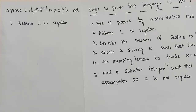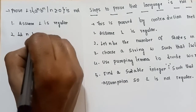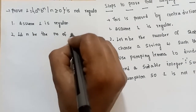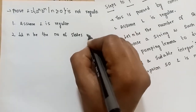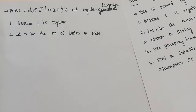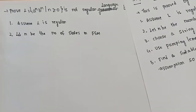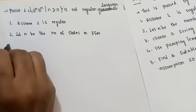Let's assume L is a regular language. So we use the constant method. Step two: let n be the pumping length — that is, the number of states in the finite state machine corresponding to this regular language.